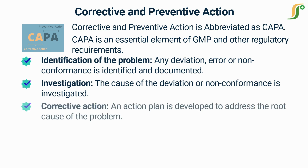The third part is corrective action. An action plan is developed to address the root cause of the problem. The corrective action aims to eliminate the problem or reduce the likelihood of its recurrence.